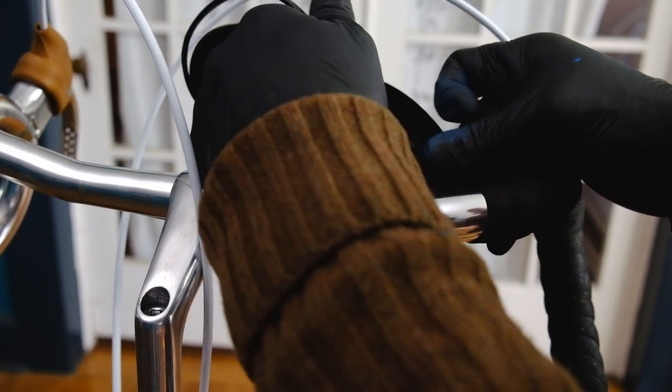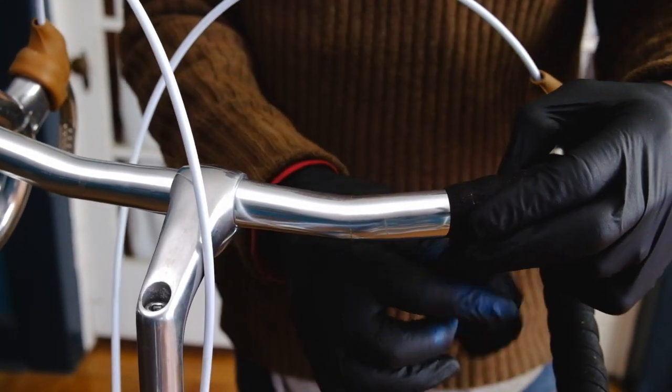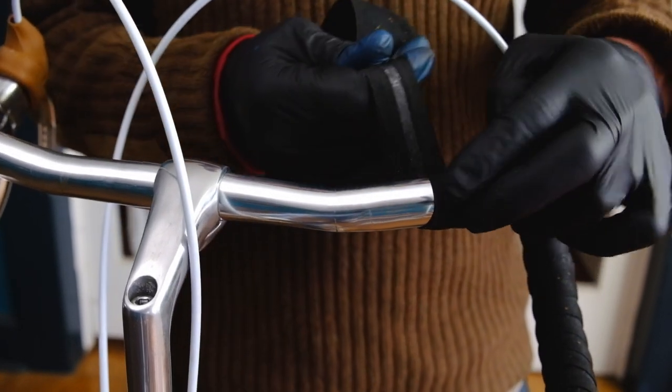As you wind out of the bends, you get another nice straight section to lay a few inches of even spiral again. Go ahead and wrap all the way up to the stem so that your finishing cut comes out straight.